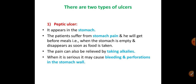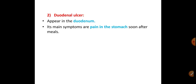For peptic ulcer, pain can also be relieved by taking alkaline or basic foods to raise the pH. When serious, it may cause bleeding and perforations in the stomach wall, leading to internal bleeding and hole formations — this is very dangerous. Duodenal ulcer appears in the duodenum, which is the first part of the small intestine. Its main symptom is pain in the stomach soon after a meal.